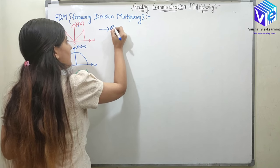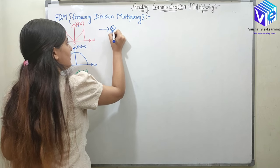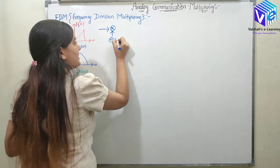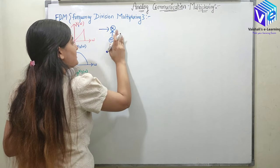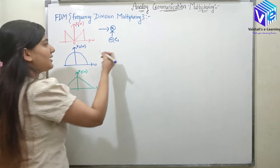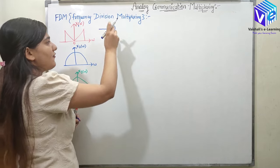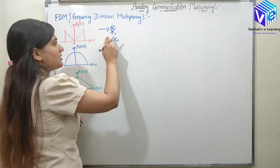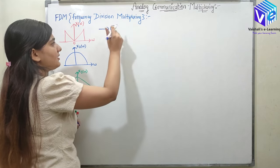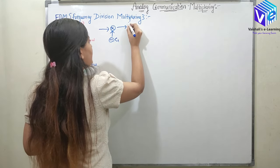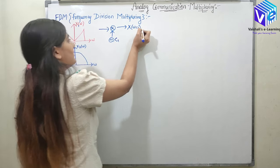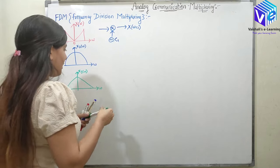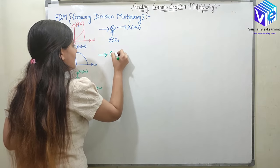Here I have a high frequency carrier representing an oscillator with carrier frequency c1. This first carrier frequency can be generated with the help of an oscillator. It is mixed with the first signal, so here I'll get x of omega shifted to c1. So we'll get the signal at frequency c1.